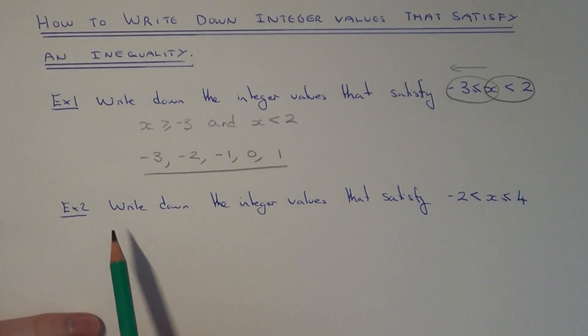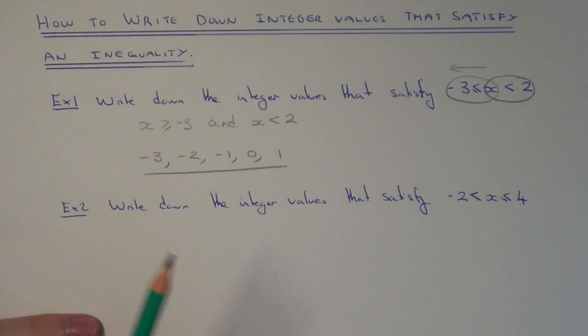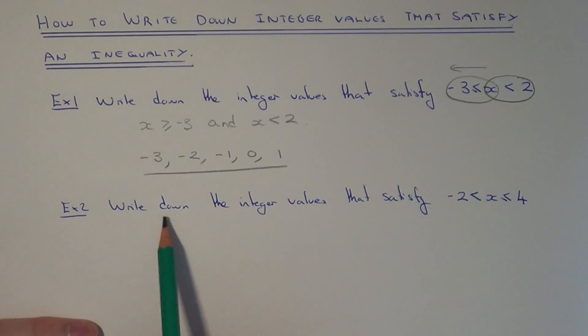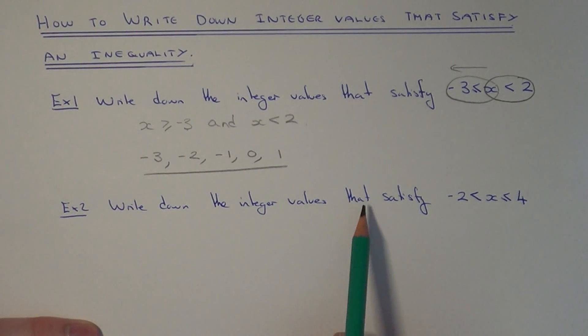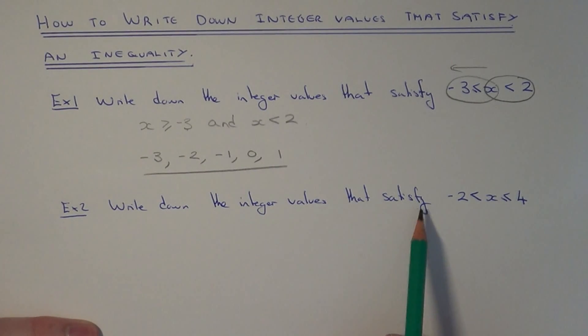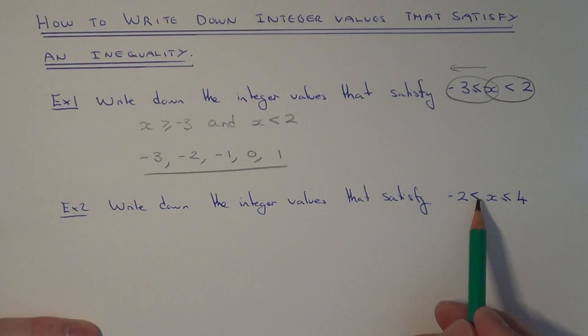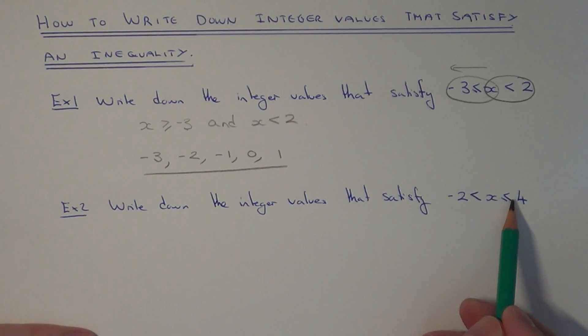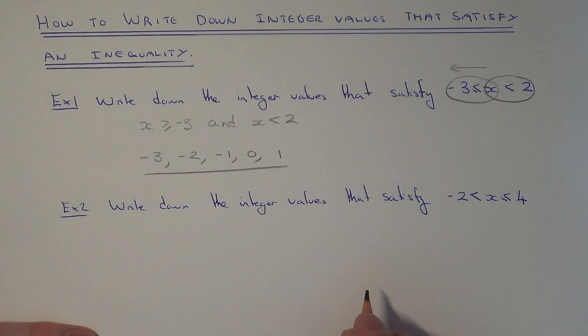Let's have a look at example 2. This time we need to write down the integer values that satisfy minus 2 is less than x, which is less than or equal to 4.